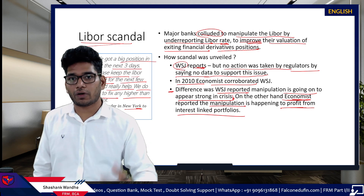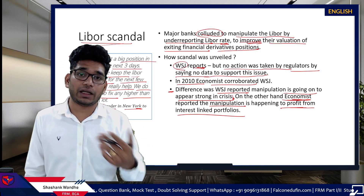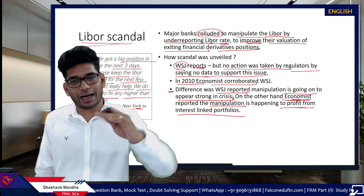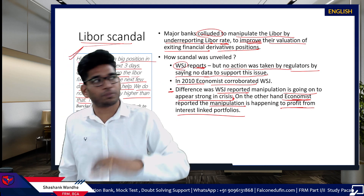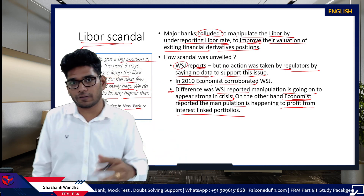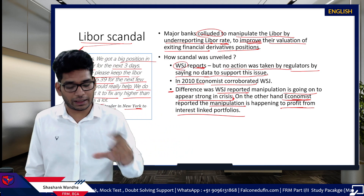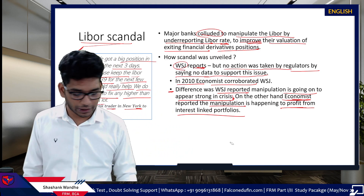Ideally, every bank should have been reporting their independent opinion, and then the top 4 and bottom 4 being eliminated with the average calculated. But in reality things were very different — banks were colluding and under-reporting.